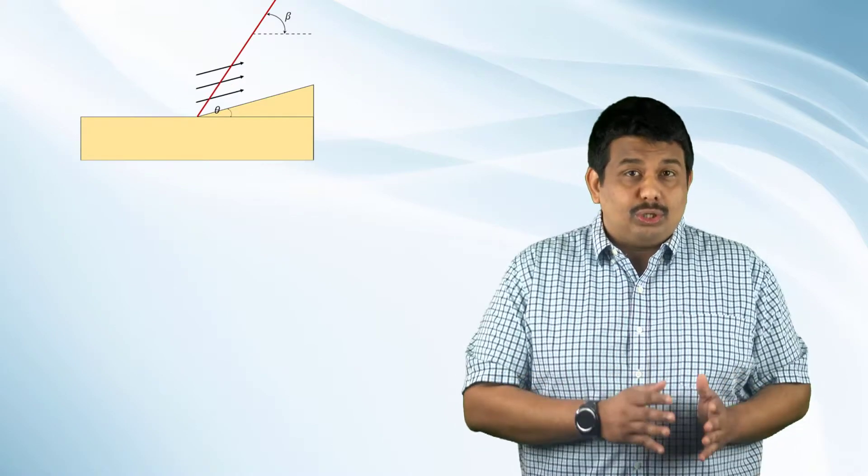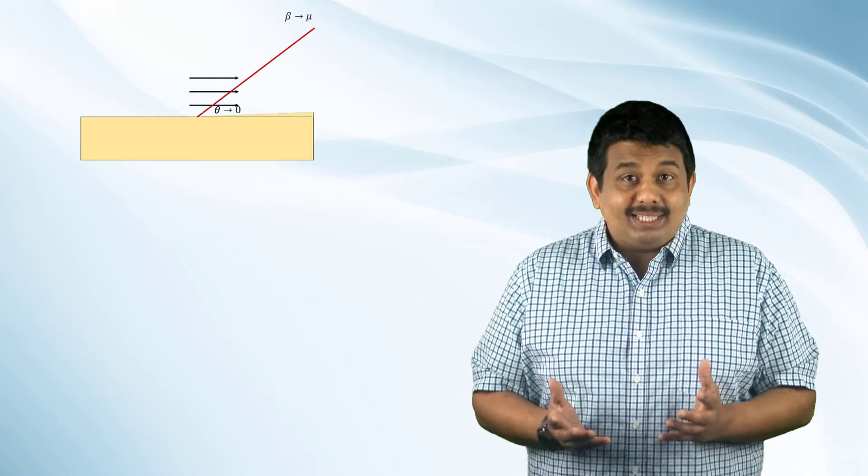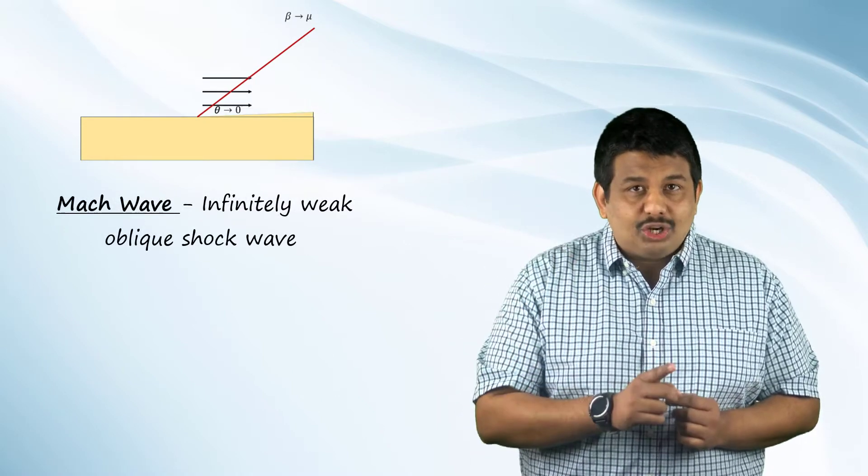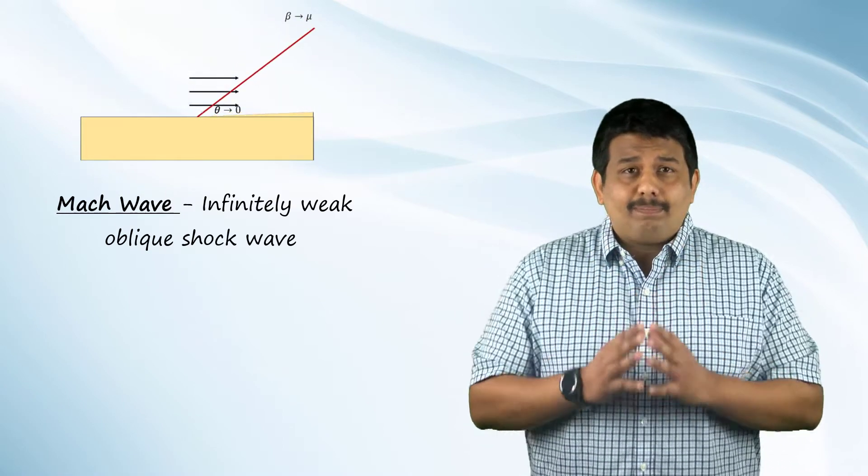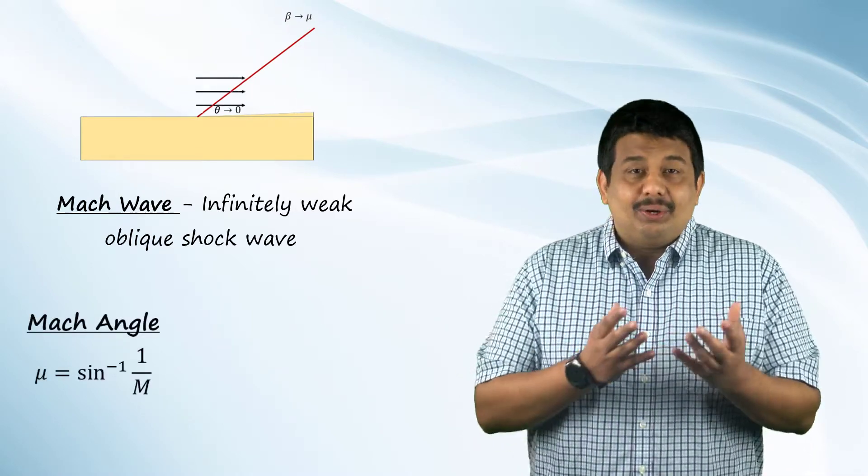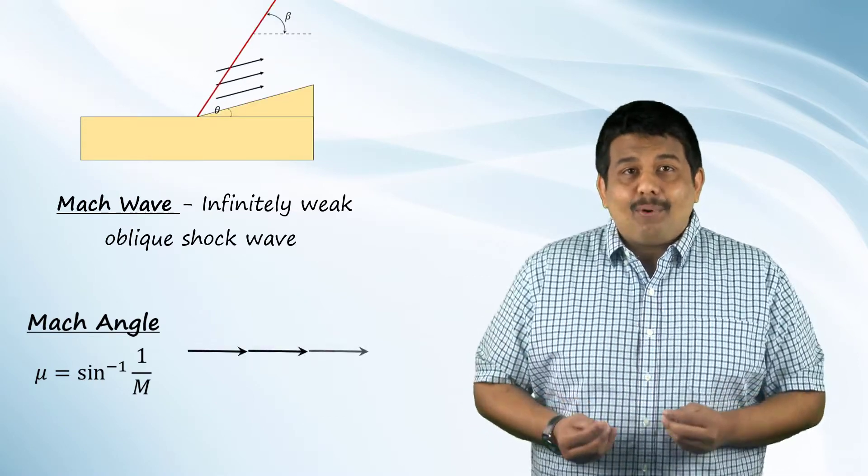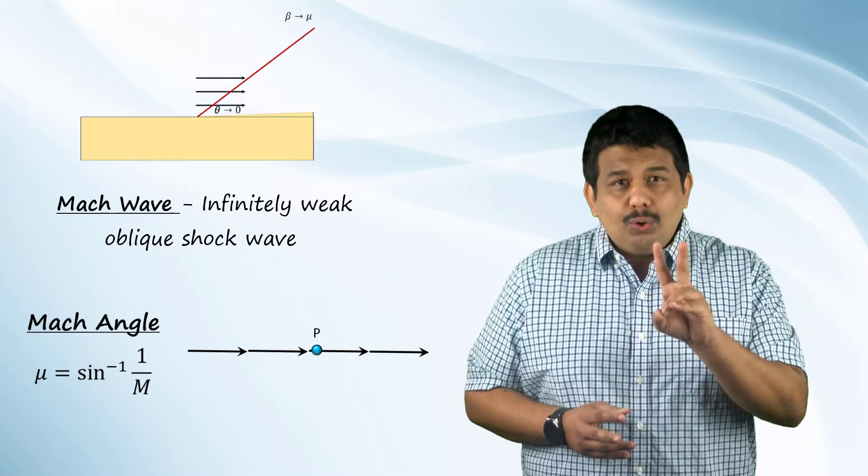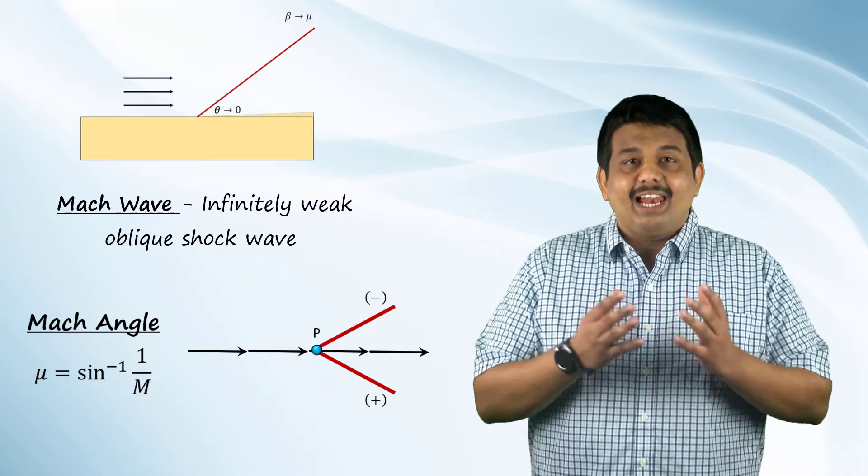As mentioned earlier, when theta is equal to 0, the weak shock solution is that of a wave referred to as the Mach wave. It is basically an infinitely weak oblique shock wave through which the pressure jump is 0. Therefore, from the pressure ratio relation, it is easy to define the Mach angle mu as shown here. At any point p in the flow field, there are 2 Mach lines, one positive and the other negative, which intersect a stream line at an angle mu in 2D. In 3D, Mach lines form a conical surface.